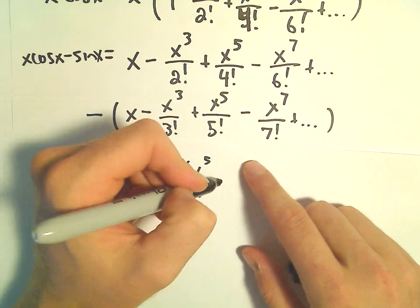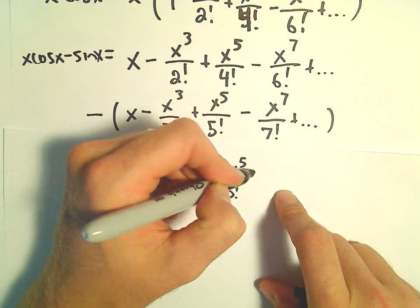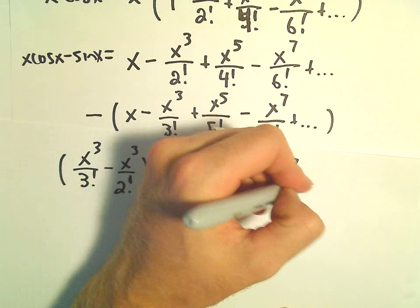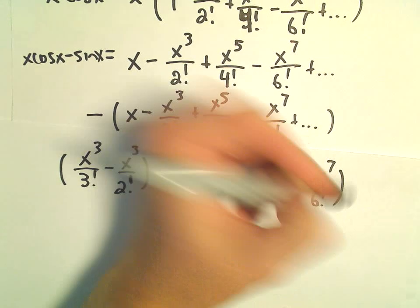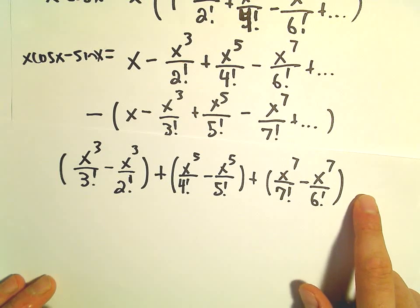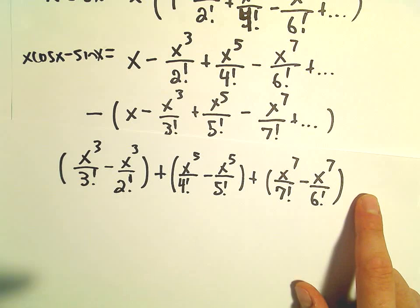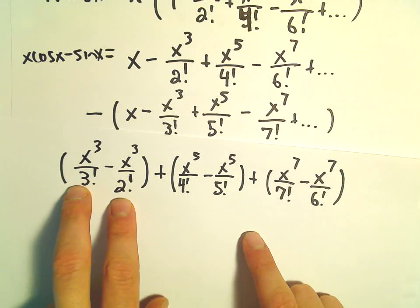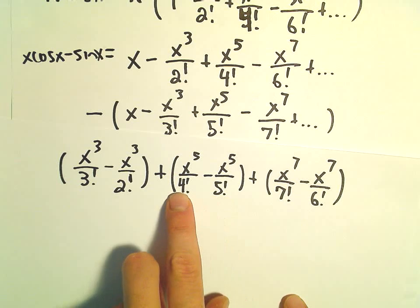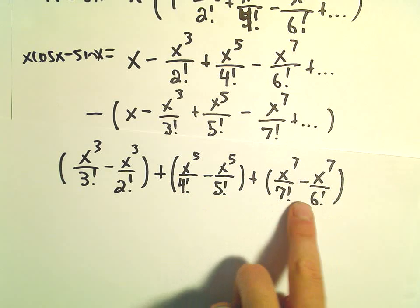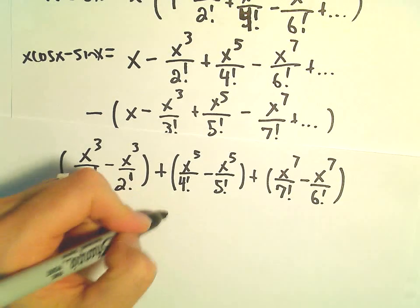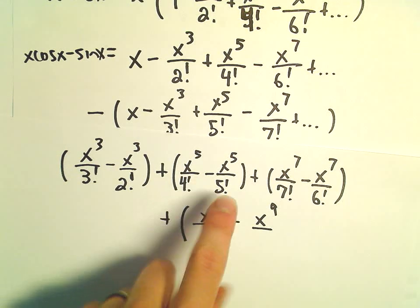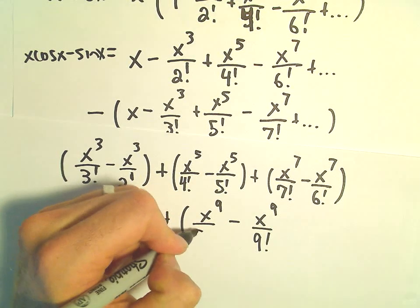We have positive x to the fifth over four factorial minus x to the fifth over five factorial. Then we'd have positive x to the seventh over seven factorial minus x to the seventh over six factorial. The next term would involve x to the ninth, and we would have a nine factorial and an eight factorial. We could keep expanding this out.